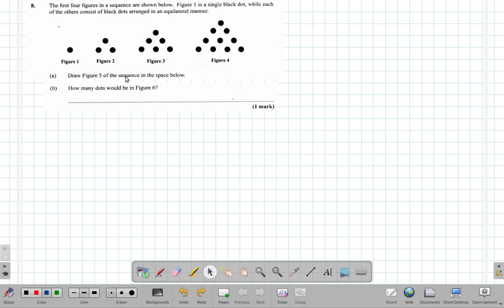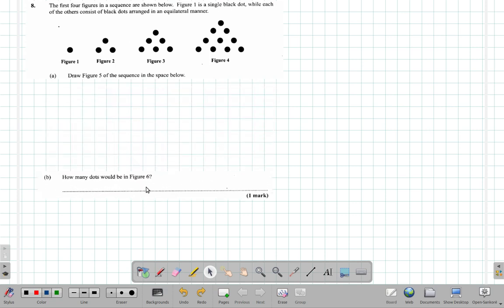You must draw figure 5 of the sequence in the space below. Now let's see you have figure 1, 1 dot. Figure 2, from bottom to top you have 2 dots, 1 dot. Figure 3, 3 dots, 2 dots, 1 dot. Figure 4. Let's look from top to bottom.